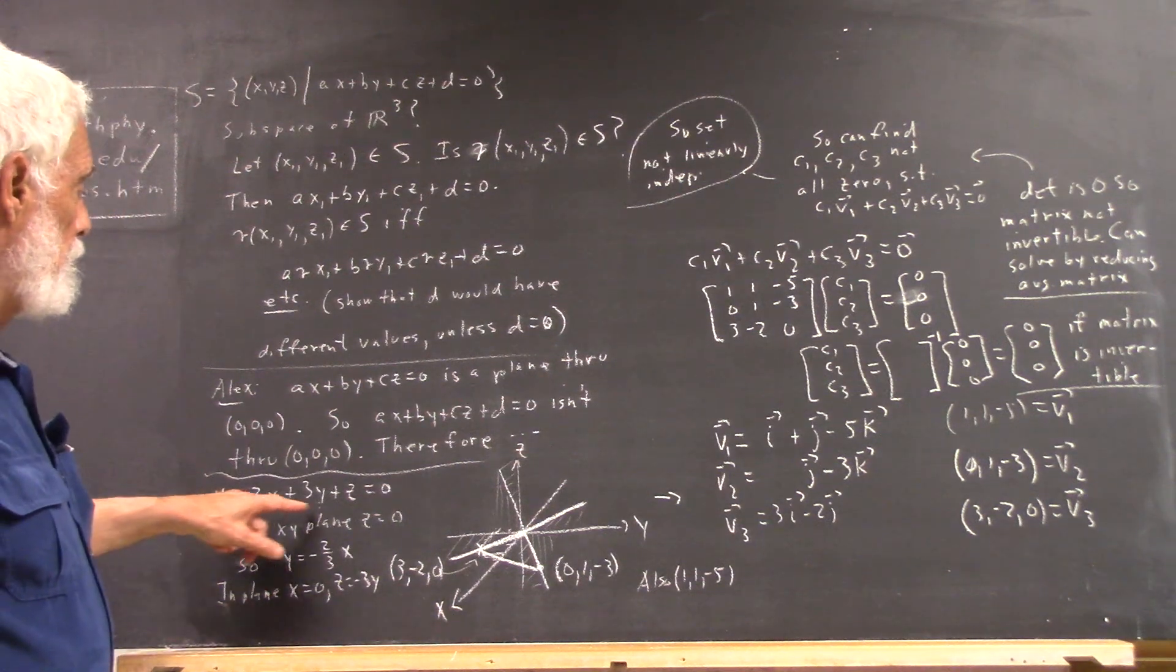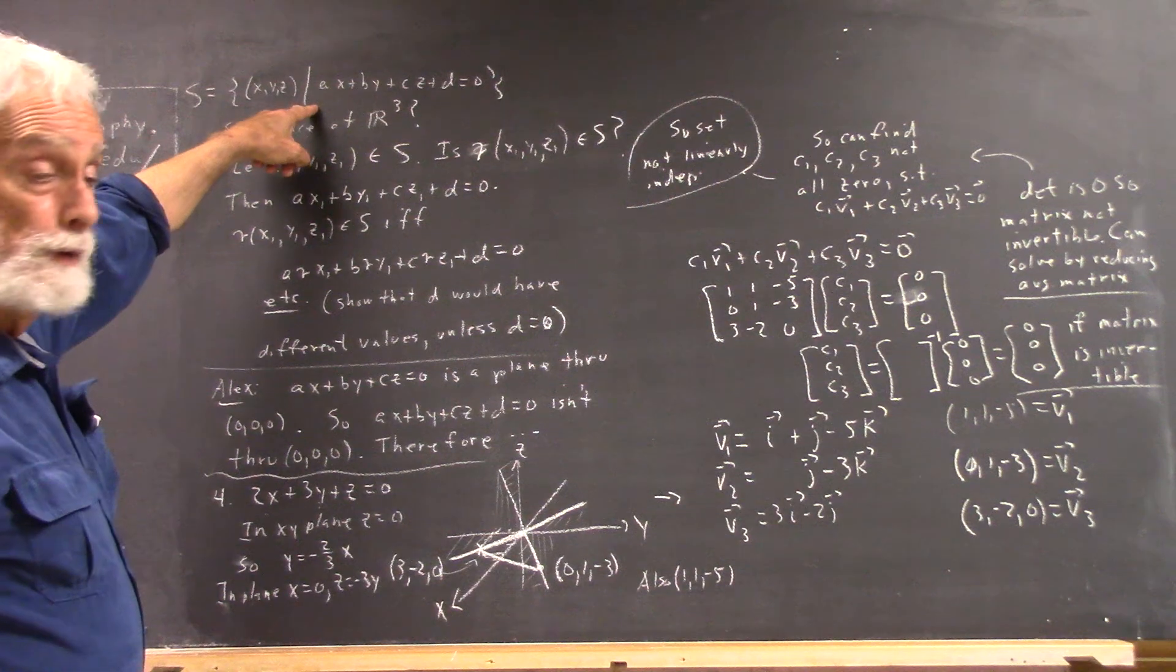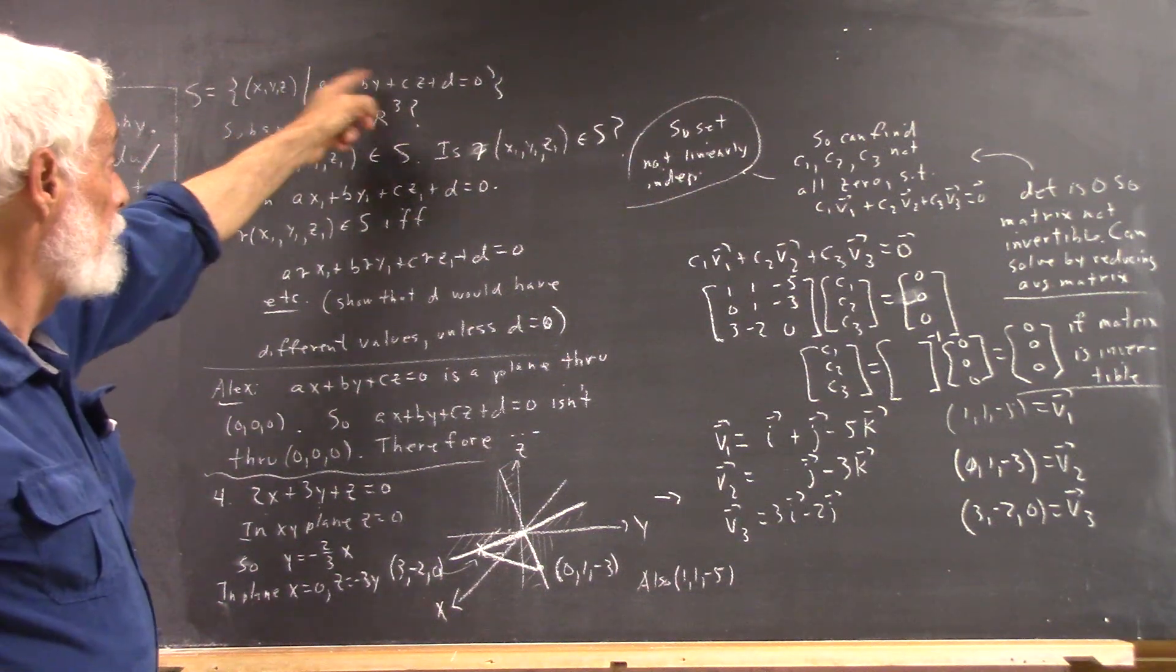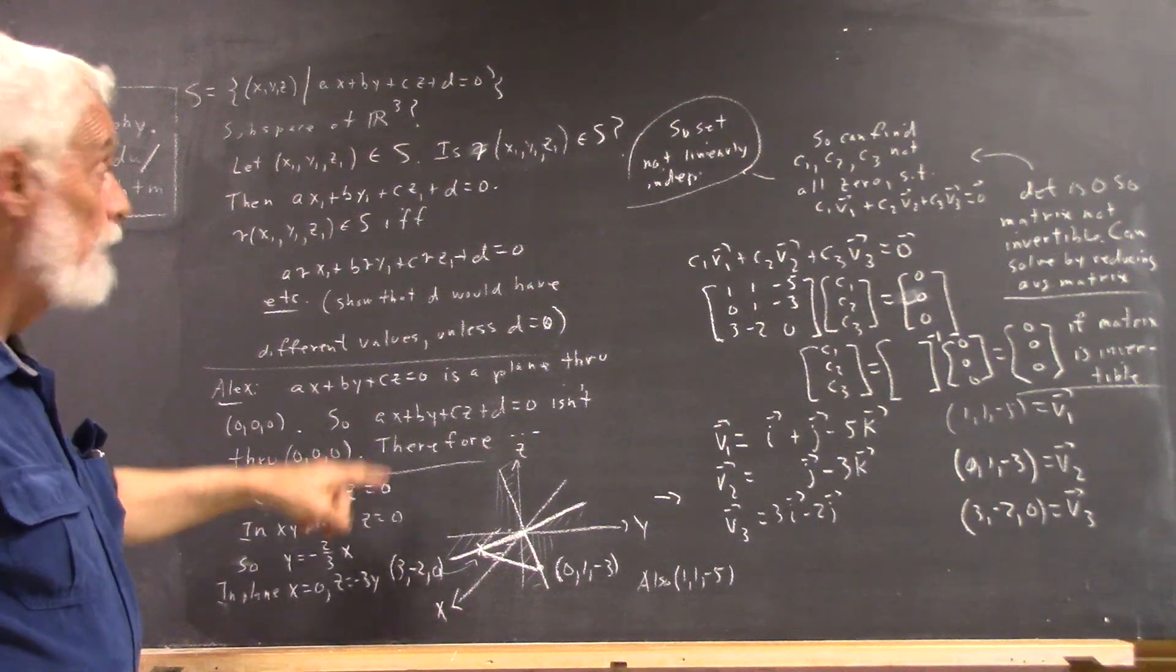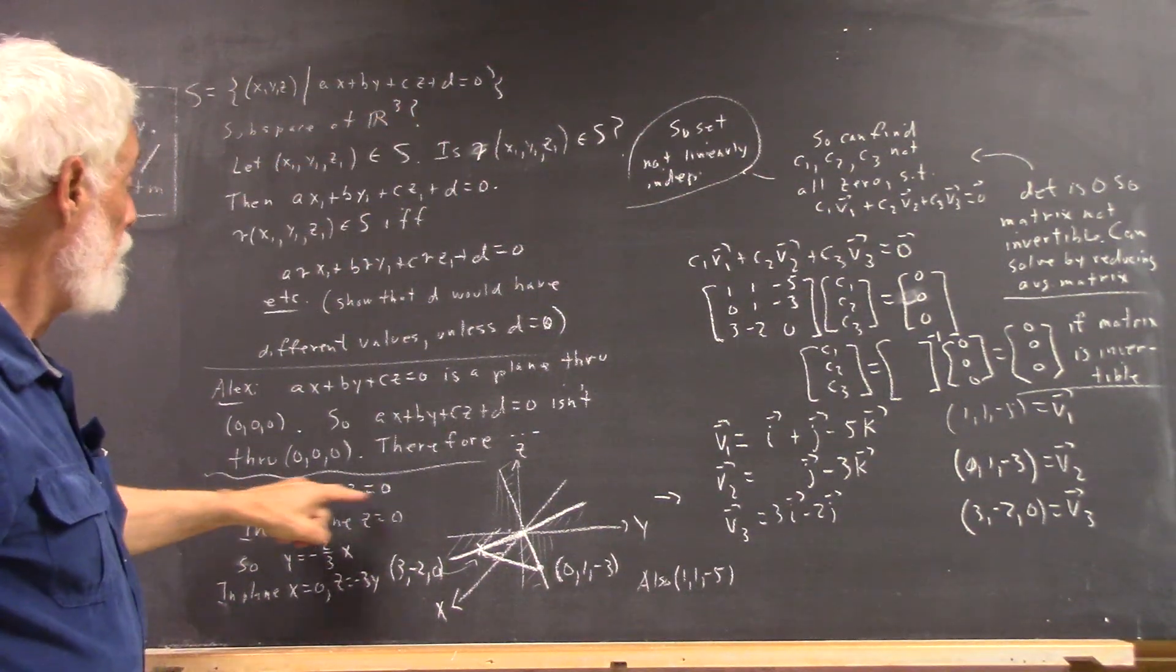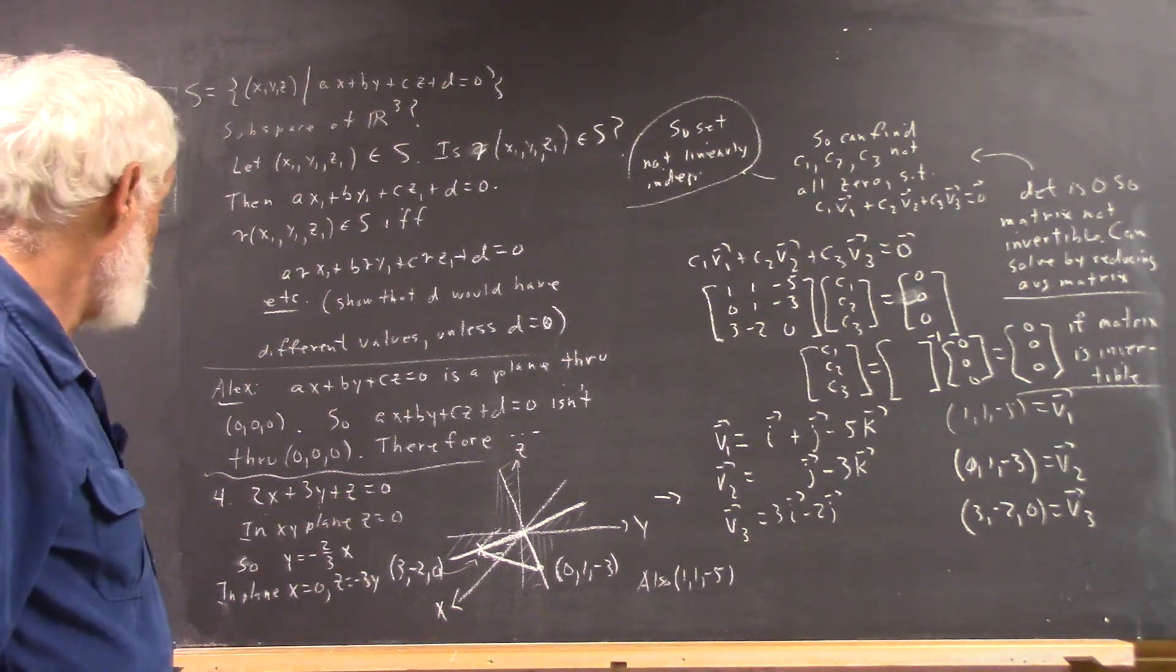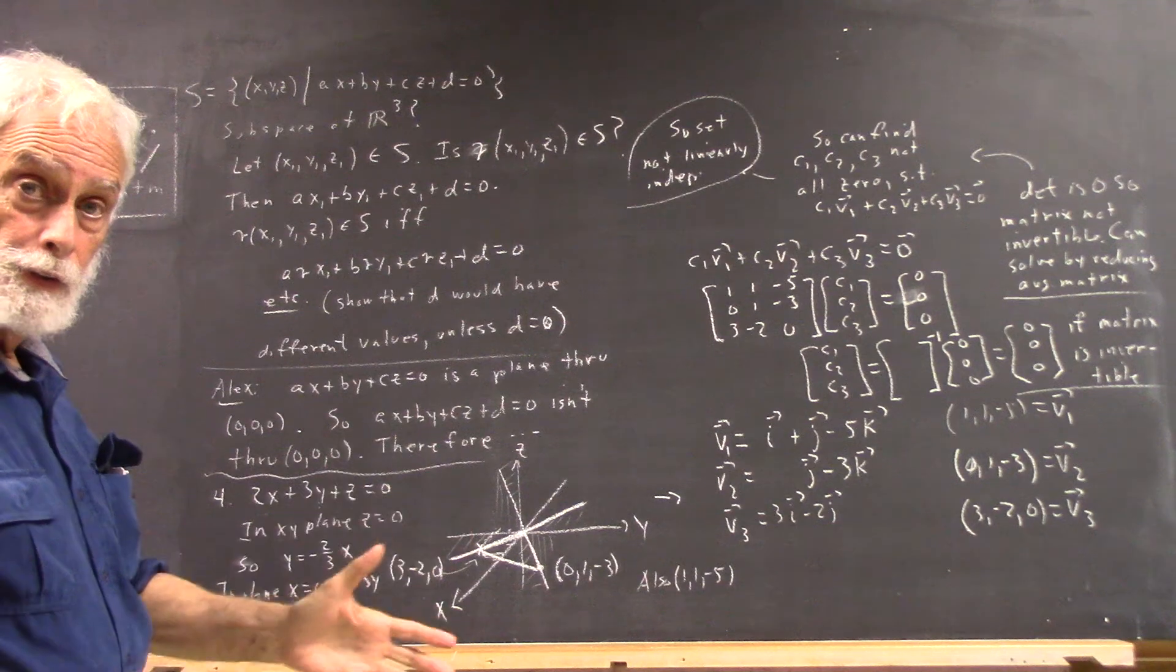Okay, so we have this equation. Now if we've proven the result here that this is a plane if and only if d is zero, then this is a subspace if and only if d equals zero. Then we know that this is going to be a subspace, that the set of XYZ values that satisfy this will constitute a subspace.